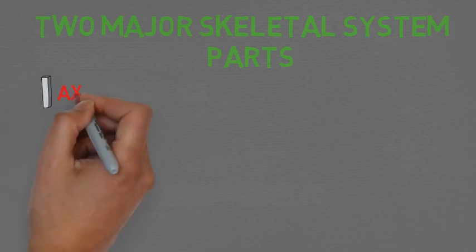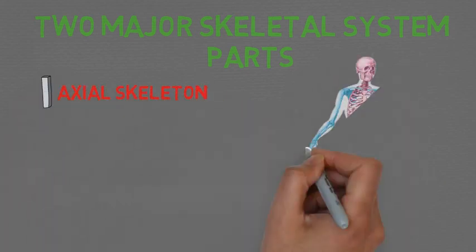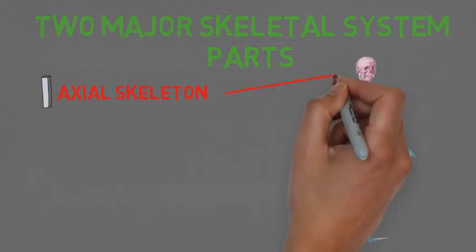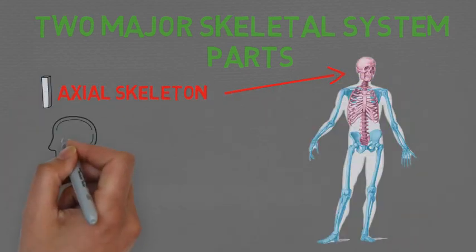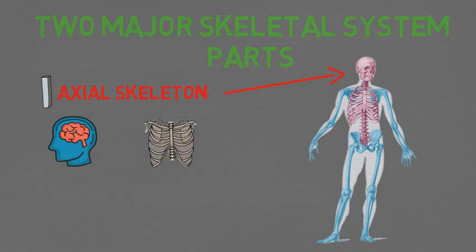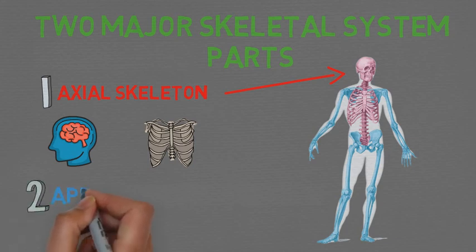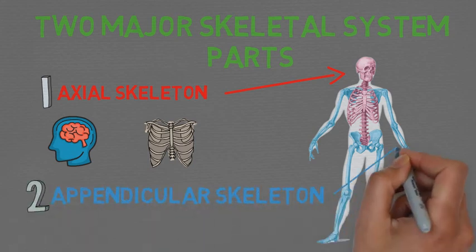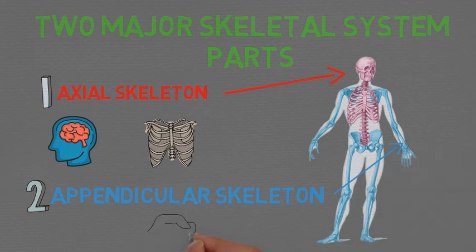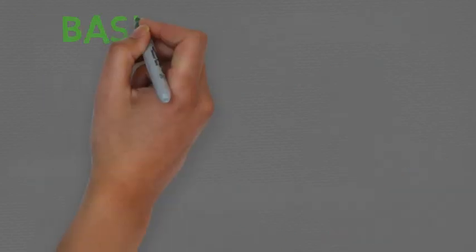The first is the axial skeleton, which includes the skull, spine, ribs, and sternum — all the bones in the central axis of the body that protect our vital organs. The second is the appendicular skeleton, which includes the appendages of the body: the shoulders, arms, hips, and legs.